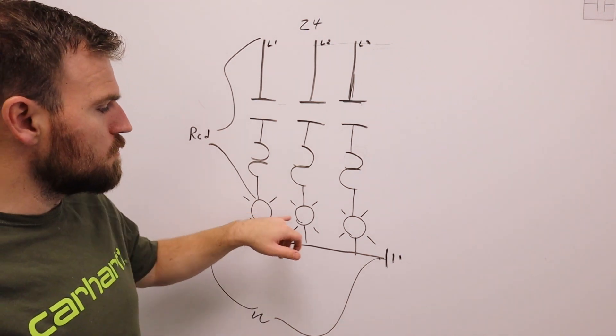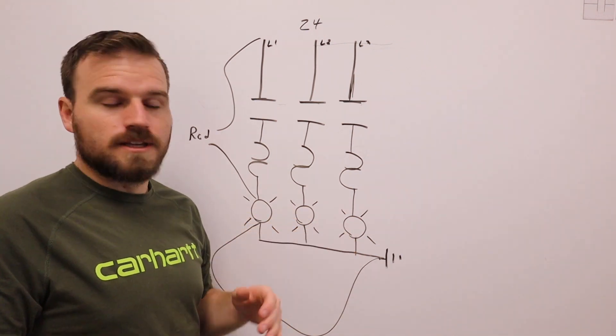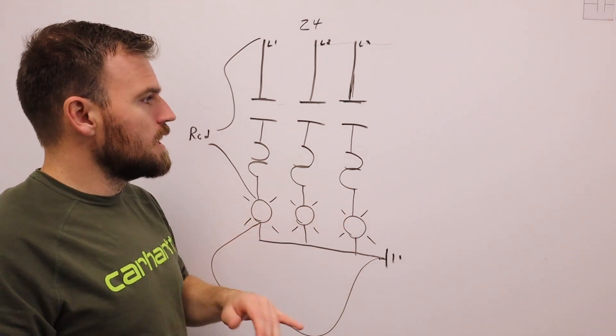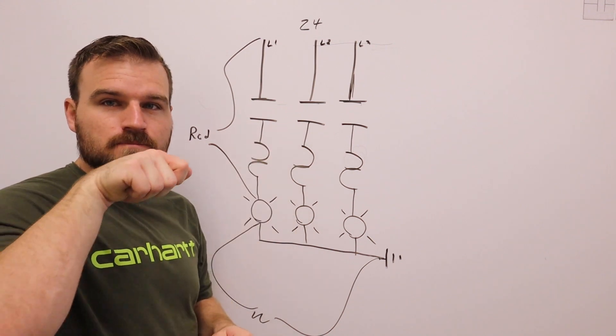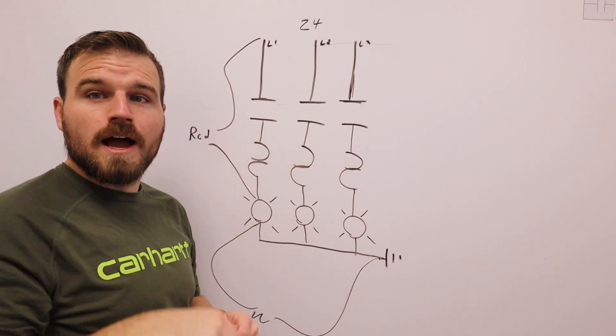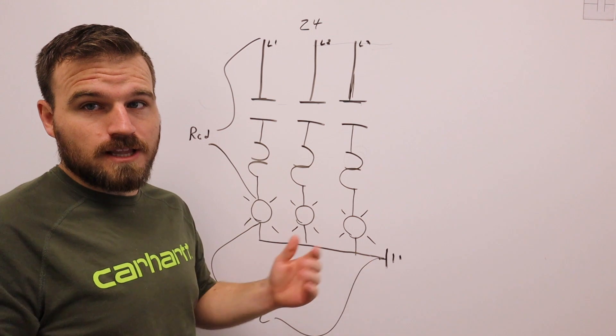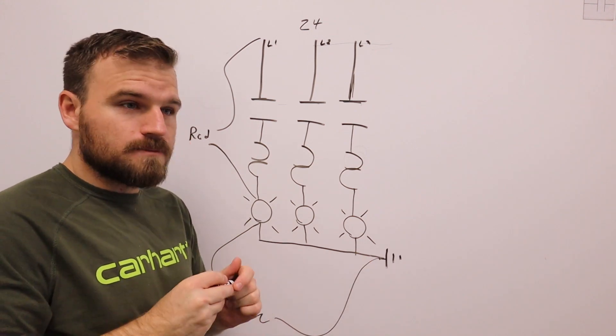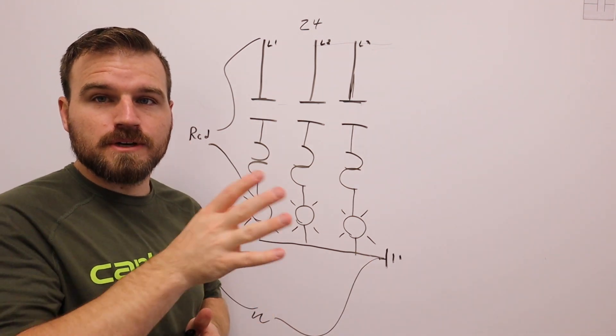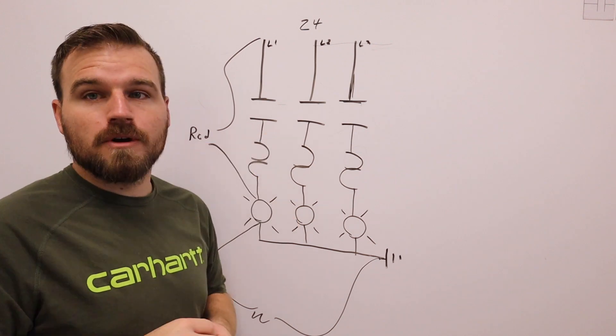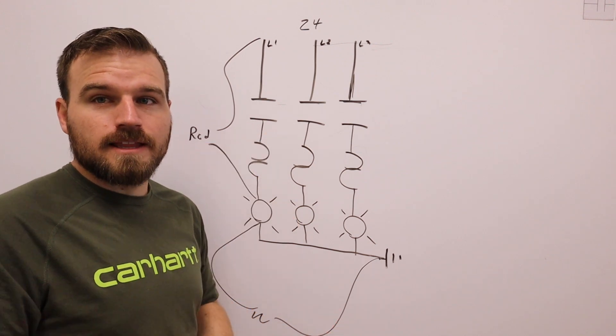So again, it doesn't matter which indicator lights you hook up. They just have to be hooked to three indicator lights and all we're going to do is we're going to be pushing the manual override of that contactor to turn on these lights. So what I'm going to do is I'm going to go ahead and switch over. We're going to go ahead and build that on the trainer, and I'm going to show you how it works, and we're going to talk about submitting it and get that all done.